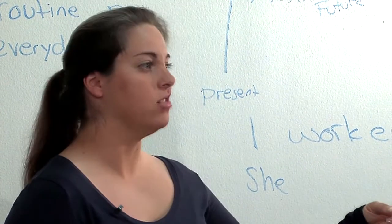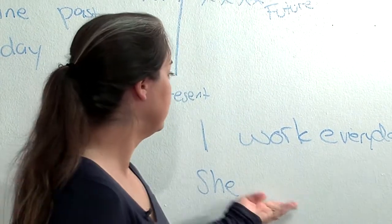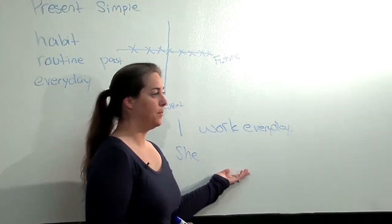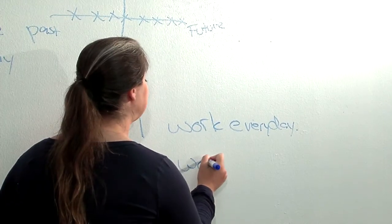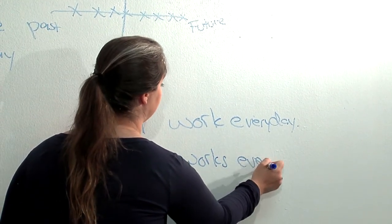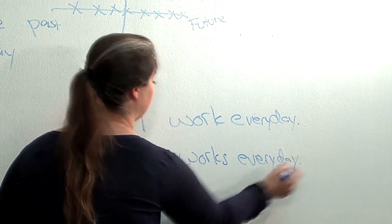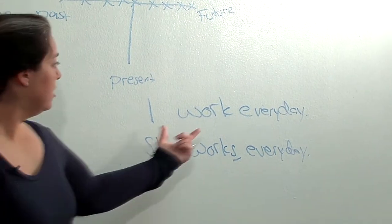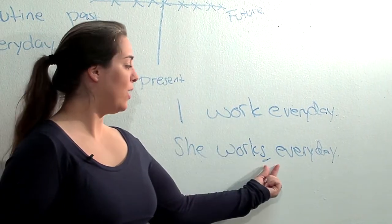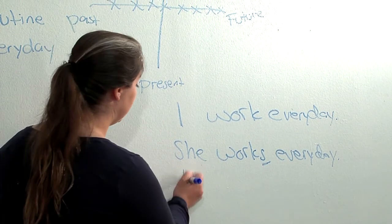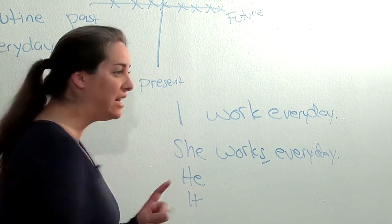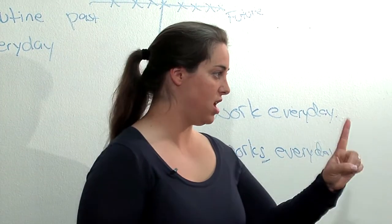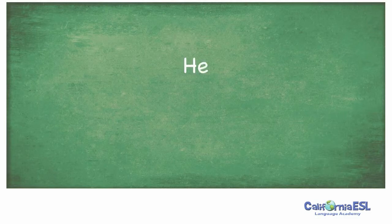She — what's the sentence? She works every day. So in the present simple tense, with the base verb, you add S for she, he, or it — one person or one thing. When we're talking about someone or something that is not directly related to us — he, she, or it — we add an S to the end.